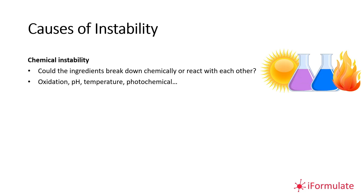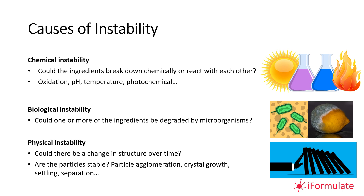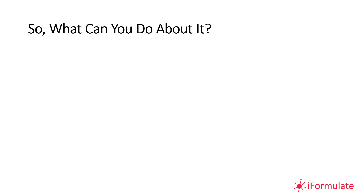Stability can have many different causes. Chemical instability occurs when ingredients break down or react with each other or the environment — through oxidation, pH changes, temperature, or photochemical effects. Biological instability involves one or more ingredients being degraded by environmental microorganisms. Physical instability involves changes in physical structure over time — particle agglomeration, crystal growth, settling, or separation — a very common cause of instability in formulations.